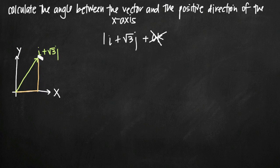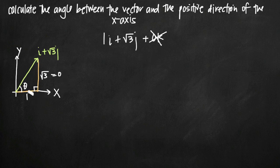Now, a couple of things we know about the triangle we've created. First, we have a right triangle with this angle being 90 degrees. We're also looking for the angle between the vector and the positive direction of the x-axis — we'll represent that angle with theta. We know this side has a length of 1 and this side has a length of square root of 3. Given two sides of our triangle, in comparison to theta, we have the length of the opposite side and the length of the adjacent side. Which trigonometric function uses opposite and adjacent? That's tangent.